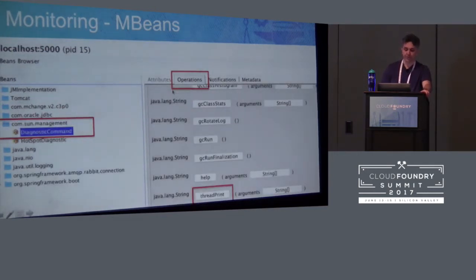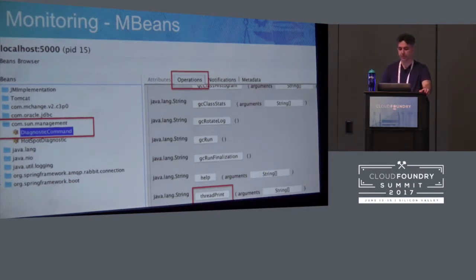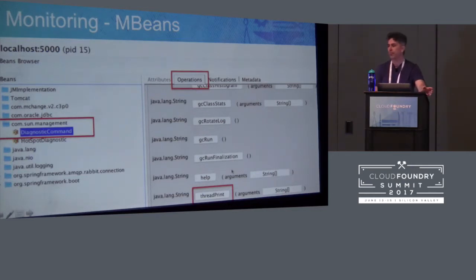Another operation is the thread dump — you can actually run this from VisualVM. This shows the thread print command: if you just take out the string array argument and run the command directly, you'll basically be able to produce a thread dump.